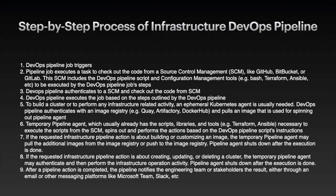The high-level step-by-step process is listed here. First, the DevOps pipeline job has to trigger. Second, the pipeline job executes a task to check out the code from a source control management system, SCM, like GitHub, BitBucket, or GitLab. The SCM includes the DevOps pipeline script and configuration management tools — for example, Bash, Terraform, Ansible, etc. — to be executed by the DevOps pipeline's job steps.